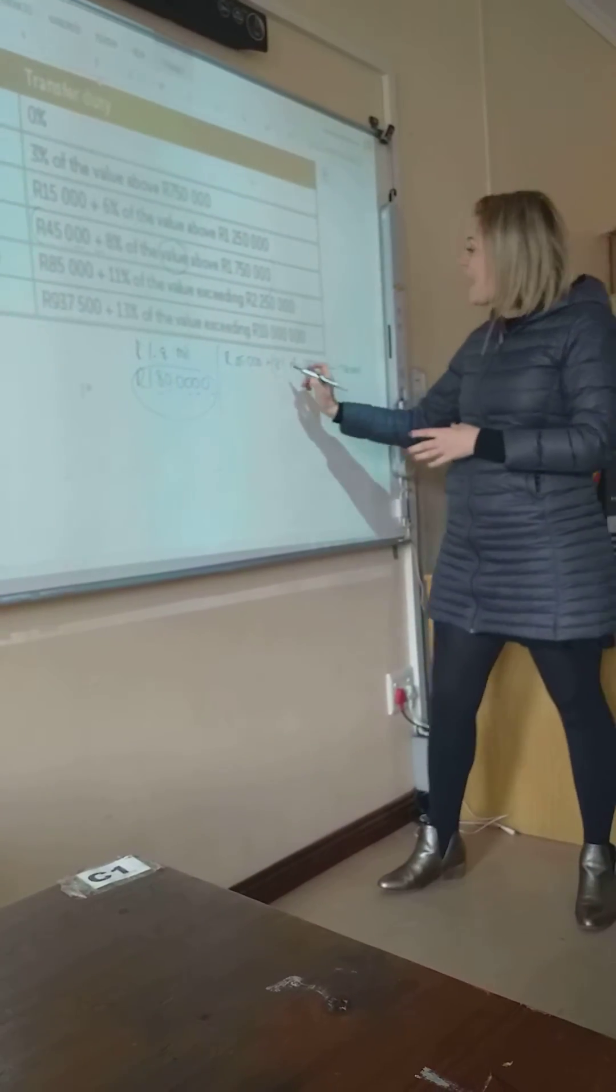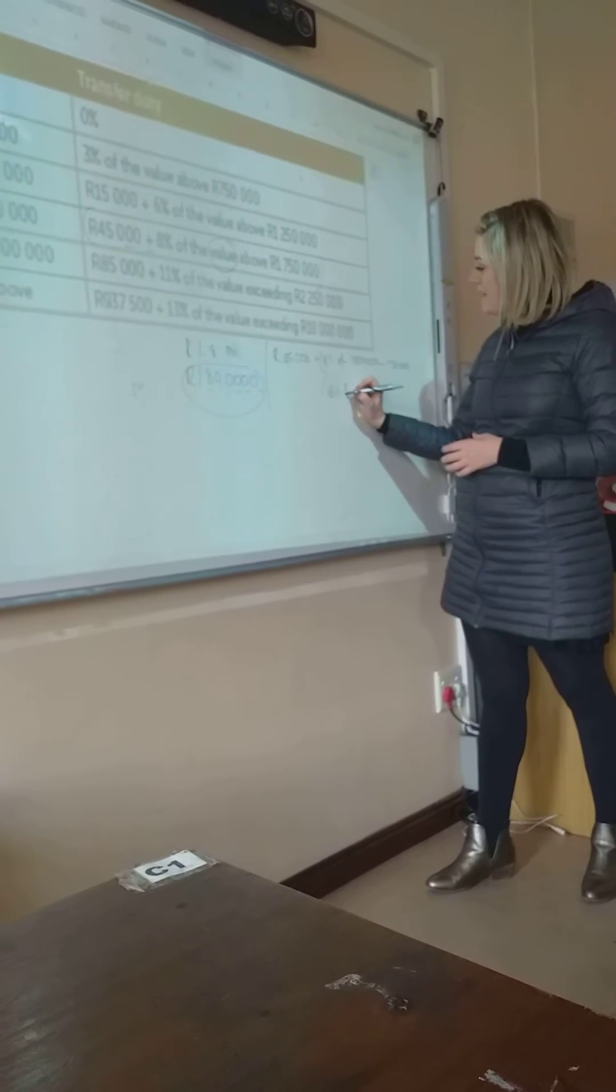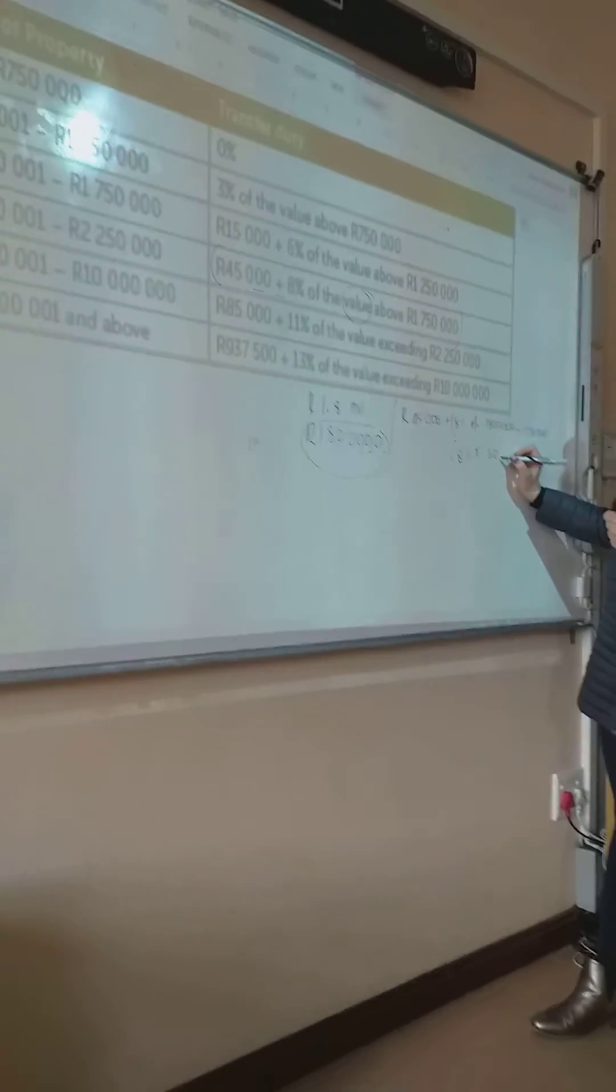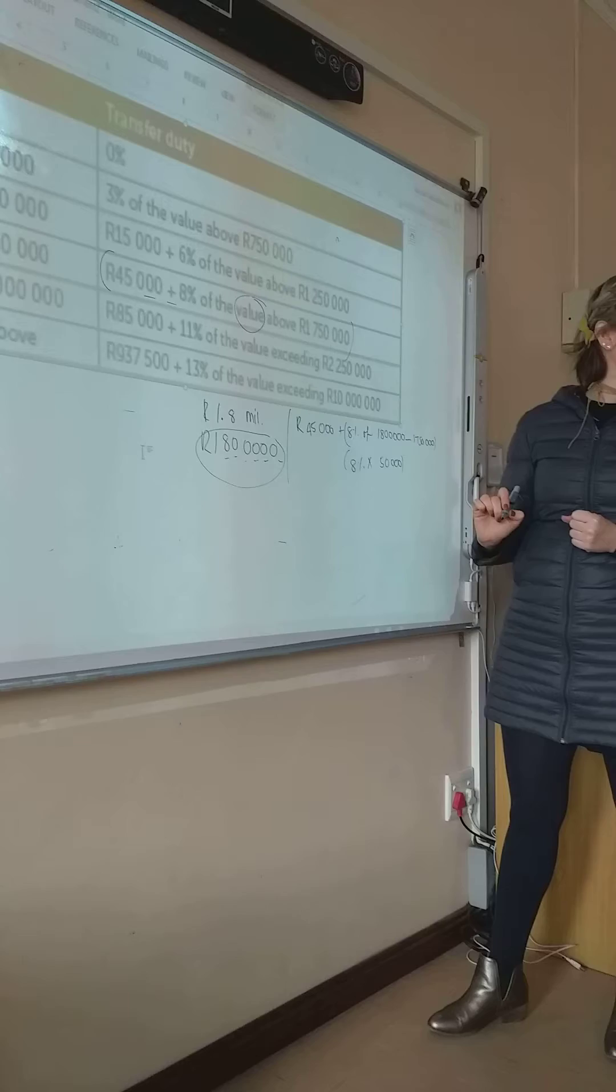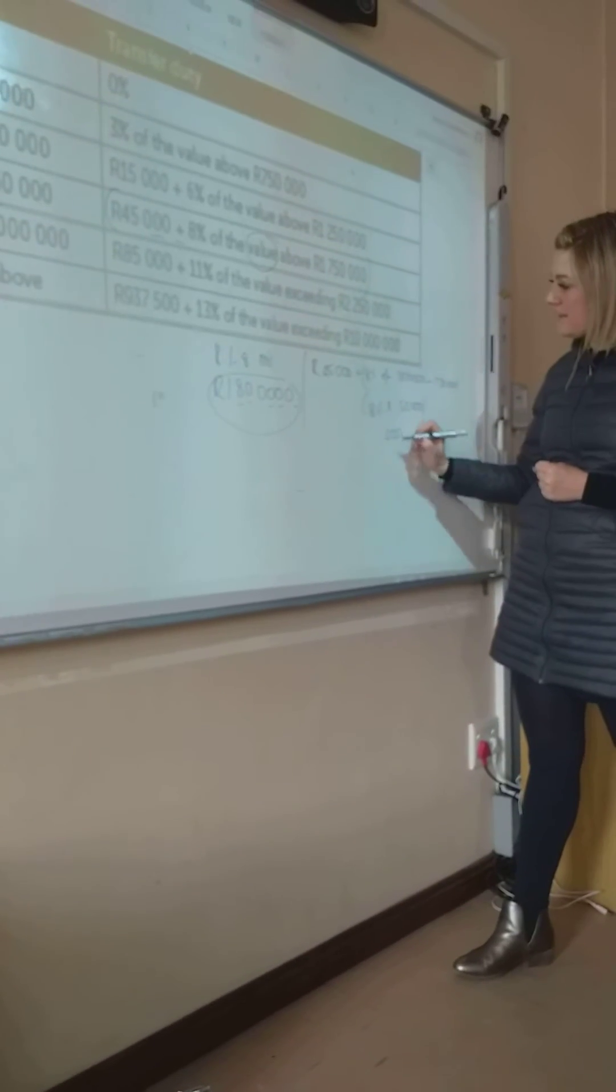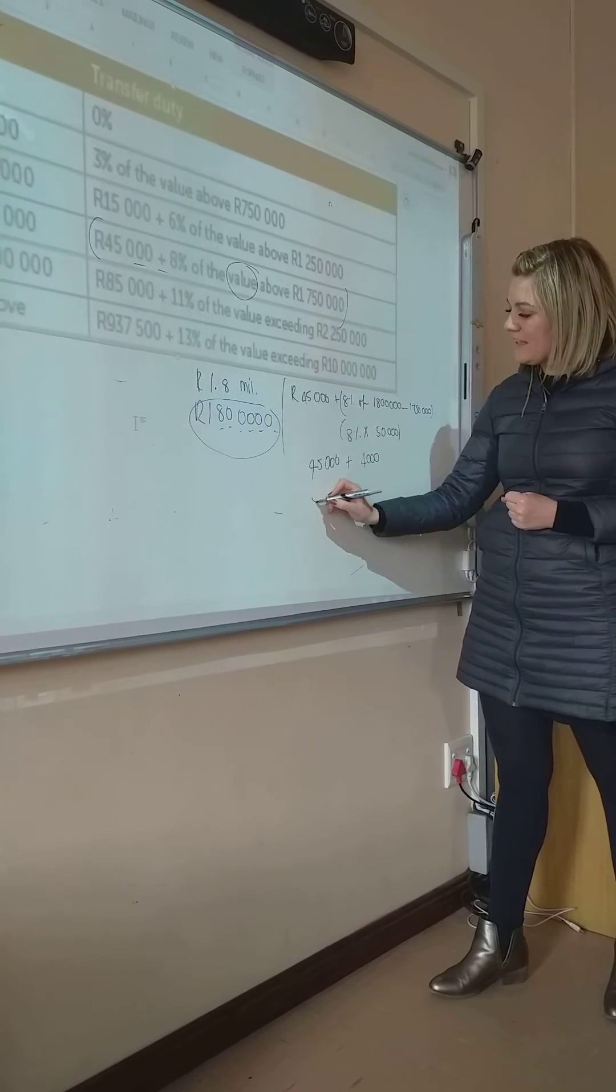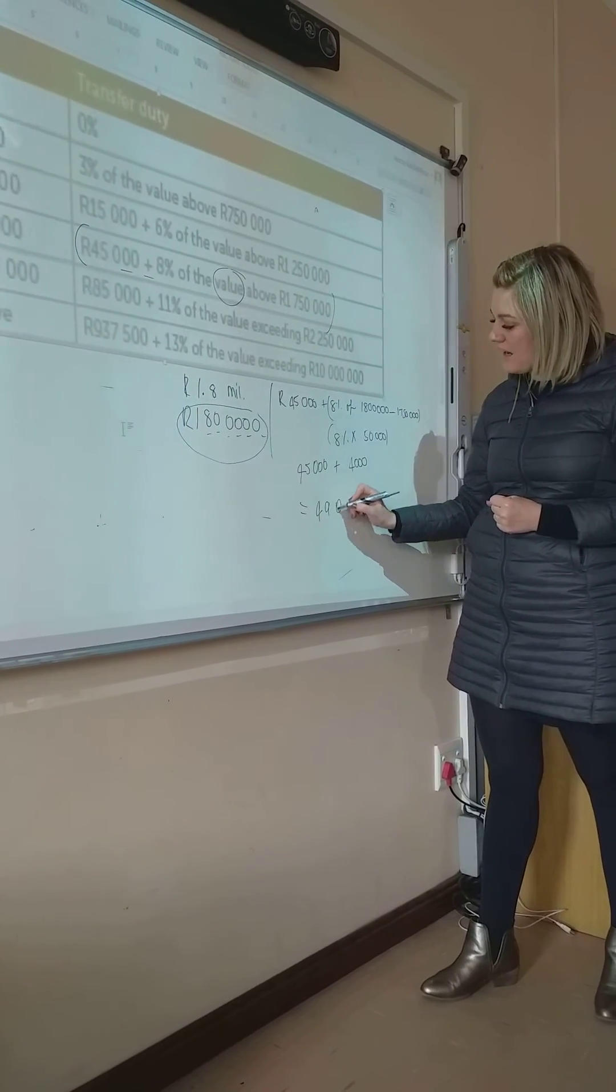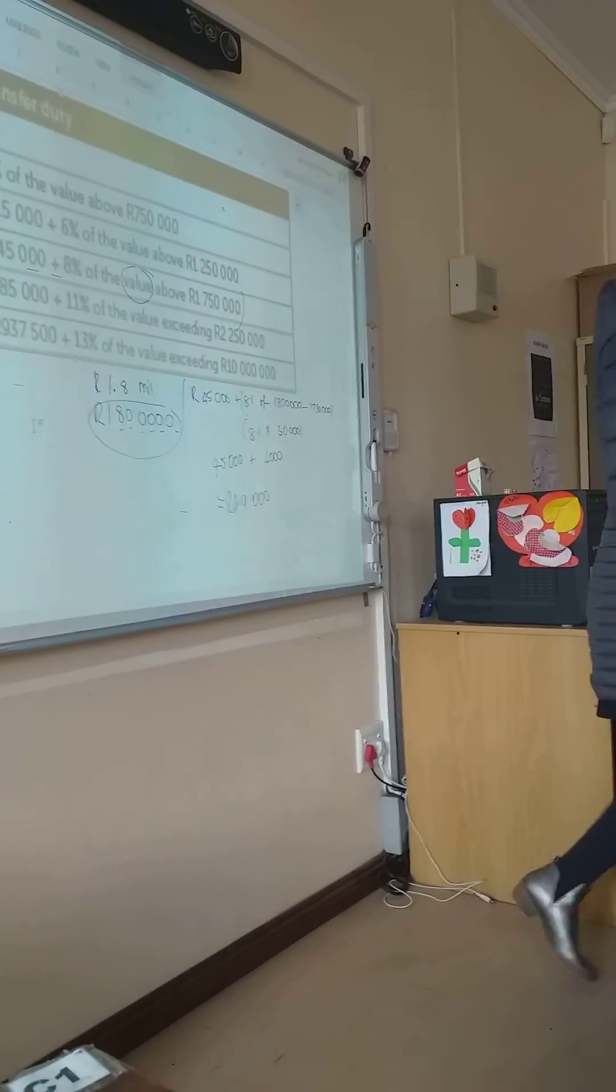When you calculate 8% of an amount, you're going to say multiply with the 50,000. Are you with me? So 8% of 50,000 is going to be 4,000. Then you still need to add the 45,000, which leaves you with 49,000.